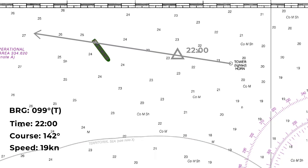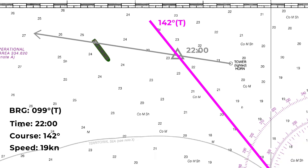From our estimated position we need to add on our track line, which is 142 degrees true. Remember, as it's true we can plot it straight on the chart, and we're ignoring the effects of set and drift today so we can plot all of this directly. The reason we're plotting this on the chart is just to make sure we're still running in safe water, and we can see there's clear water all around.